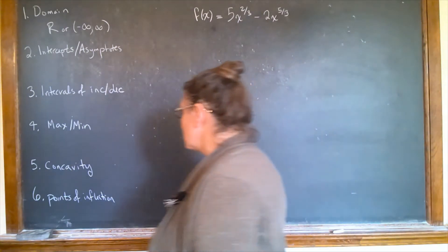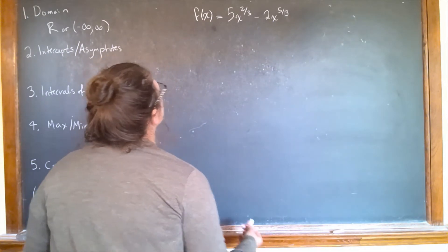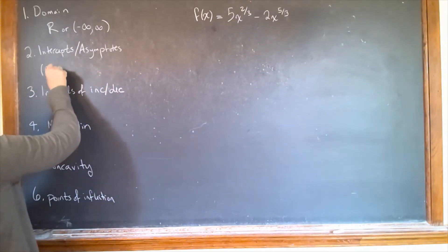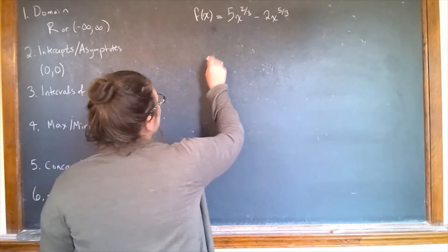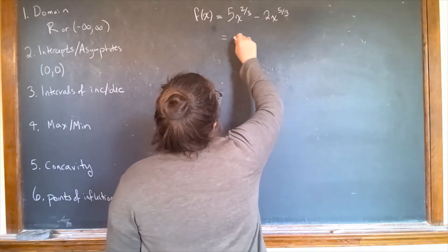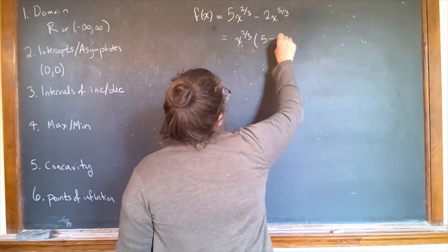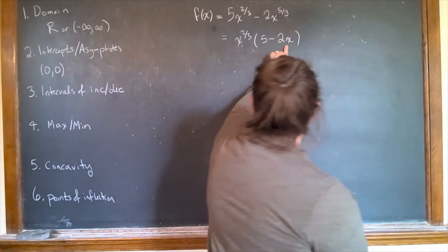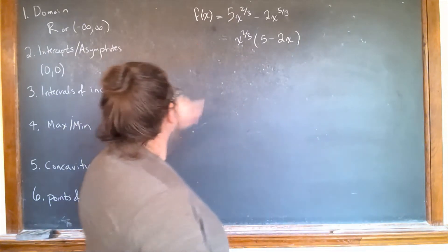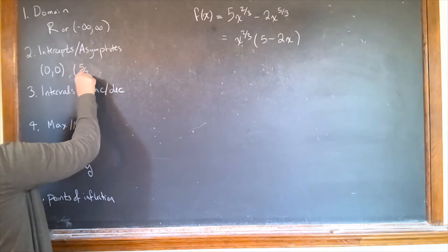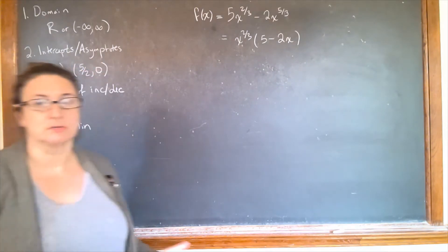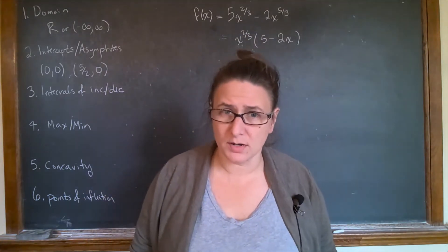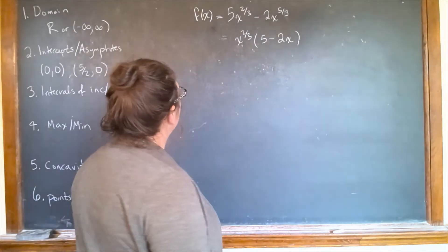Intercepts and asymptotes: sometimes it's more difficult to solve for the intercepts, but you can always plug in x = 0 to find the y-intercept. If I plug in x = 0, I get y = 0, so that's one point on my graph. I can also factor out x^(2/3), giving me x^(2/3)(5 - 2x), which shows x = 5/2 is also an intercept. There are no asymptotes.